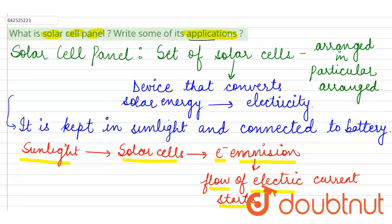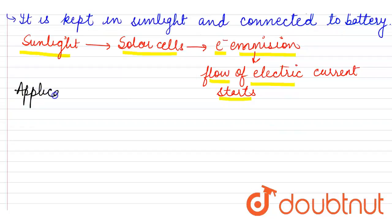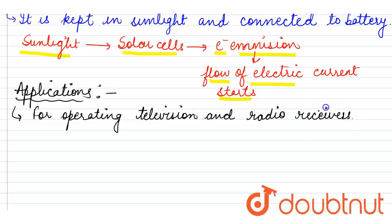Coming to the applications of solar cell panels: these panels are very effective for operating television and radio receivers. The signal receivers of televisions and radios work efficiently using solar cell panels.